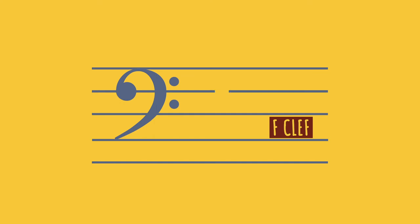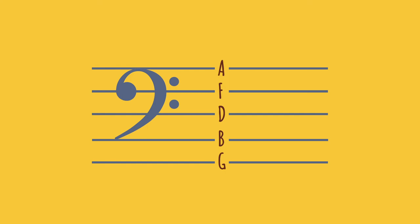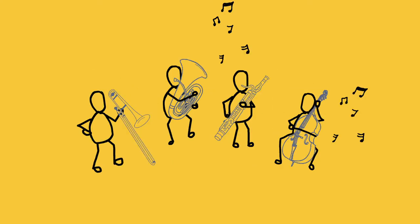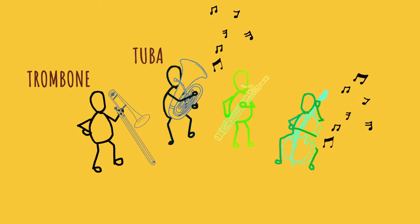Another commonly used cleft is the bass cleft or F cleft. There are two dots on the bass cleft, one above and one below the 4th line of the stave. This line represents the F note when the bass cleft is used. Notes represented by the lines are G, B, D, F, A, and notes represented by spaces are A, C, E, G. These are some instruments that use the bass cleft usually.